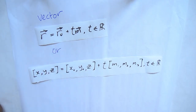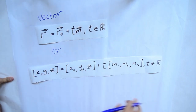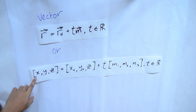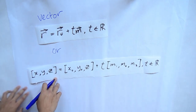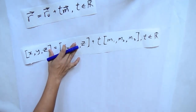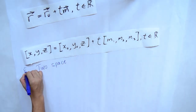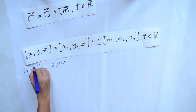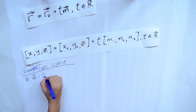This is the vector equation: r equals r0 plus tm, which is also written as bracket x, y, z equals bracket x0, y0, z0 plus t bracket m1, m2, m3.